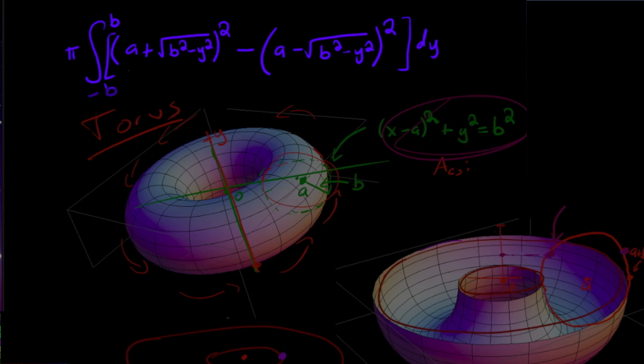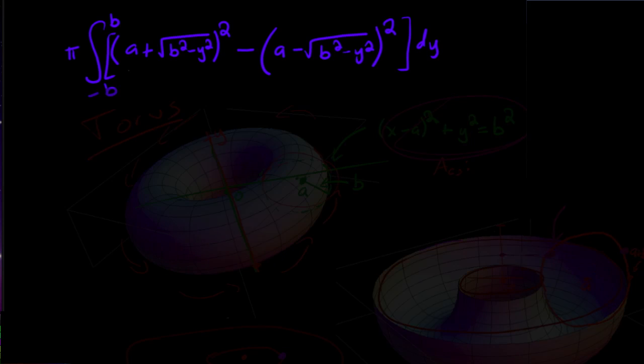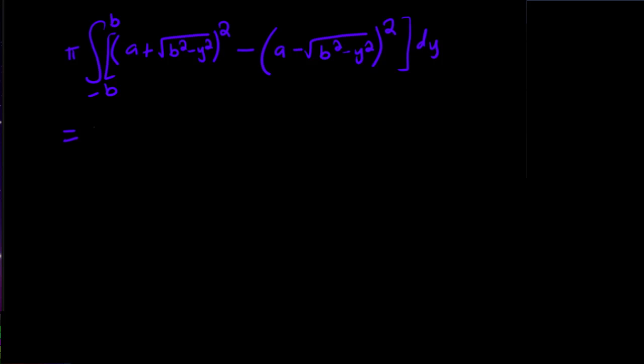Remember a and b are constant. Okay so if you simplify this a little bit, what you're going to get is this is the same as 4a pi the integral from negative b to b of the square root of b squared minus y squared dy.